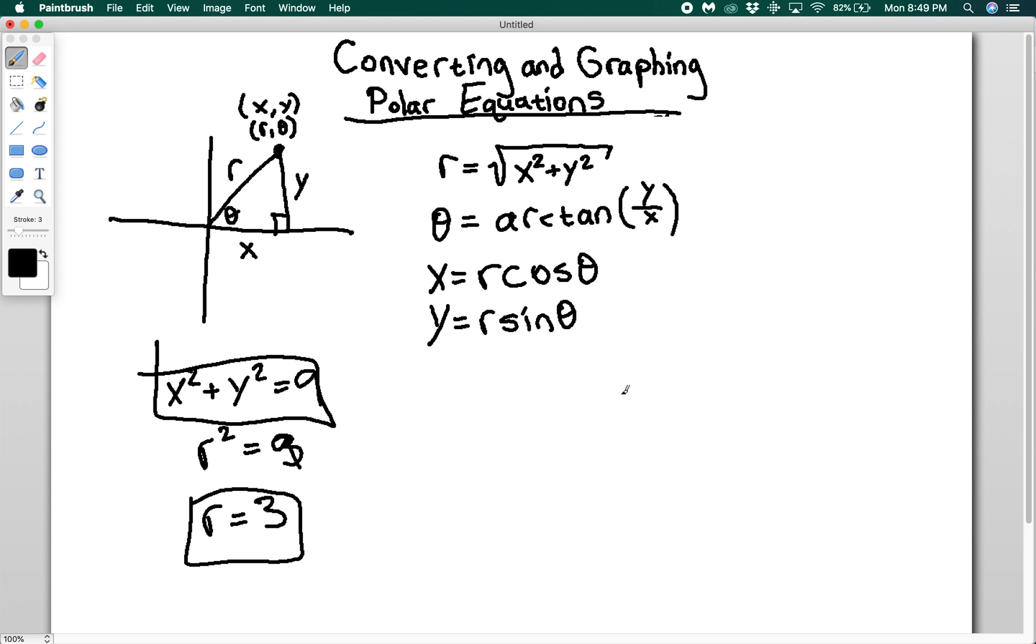If I want to do a parabola y equals x squared, I want to do that in Cartesian coordinates. If I want to switch this over to polar, what happens? Well I get r sine theta is equal to x squared, so I'm going to have r squared cosine theta squared. Now I'm going to have r squared cos squared theta minus r sine theta equals zero.